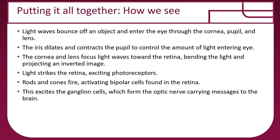Putting it all together: light waves bounce off objects and enter the eye through the cornea, pupil, and lens. The iris dilates and contracts the pupil to control the amount of light entering. The cornea and lens focus light waves toward the retina, presenting an inverted image. Light strikes the retina, exciting the photoreceptors — the rods and cones fire action potentials, activating bipolar cells, which activate ganglion cells, and the ganglion cell axons form the optic nerve that carries the message to the brain.